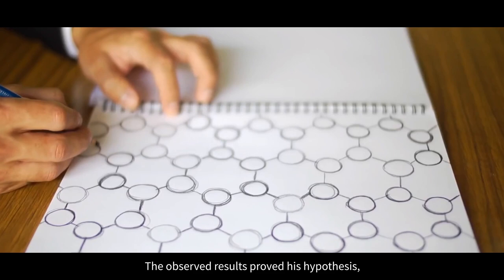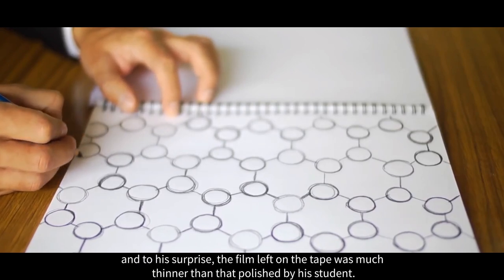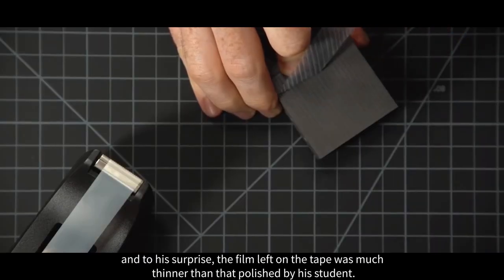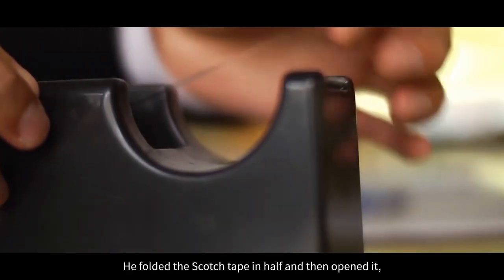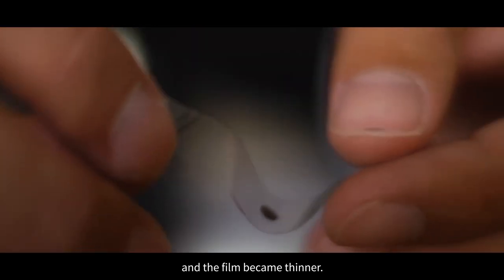An idea suddenly occurred to him: maybe there was a graphite film left on the tape as well. The observed results proved his hypothesis, and to his surprise, the film left on the tape was much thinner than that polished by his student. He folded the scotch tape in half and then opened it, and the film became thinner.